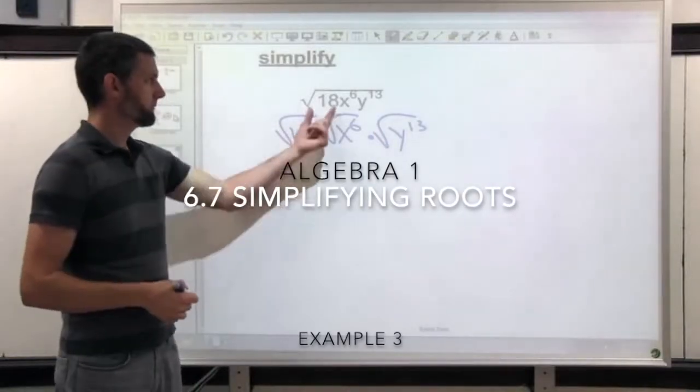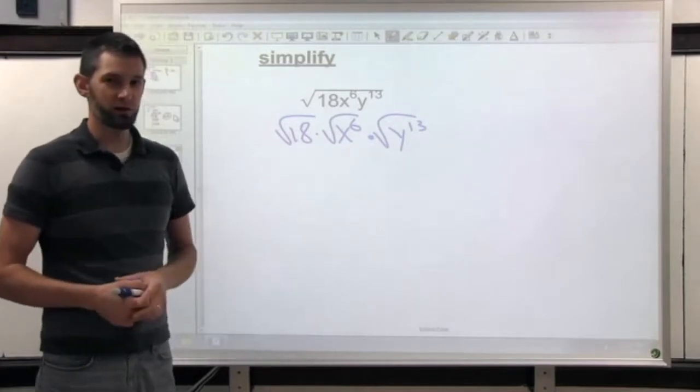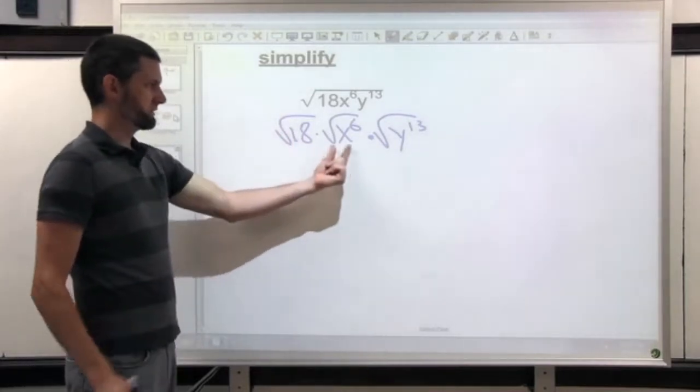If you want to reduce a square root but happen to have a bunch of variables in it, take a look at those variables like this. You can work with 18 on your own.